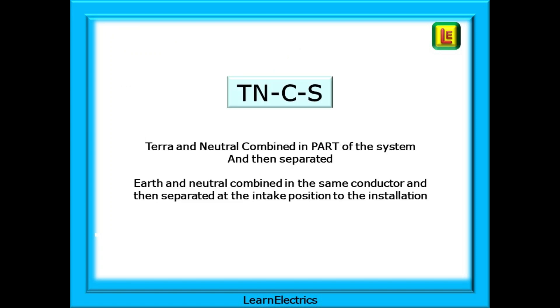As cable technology improved, the TNCS system was introduced. Terra and Neutral are combined in part of the system, and then they are separated. We say that the Earth and Neutral are combined in the same conductor, and then separated at the intake position to the installation. TNCS. Earth and Neutral combined, and then separated.